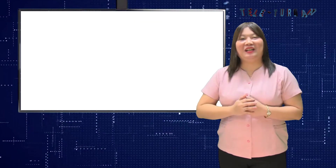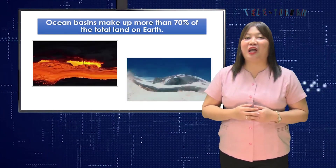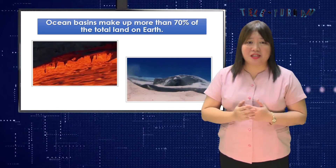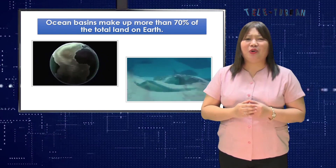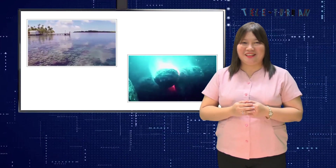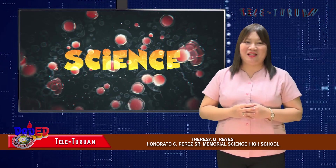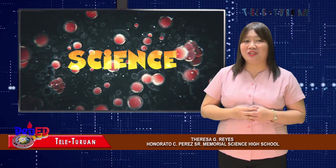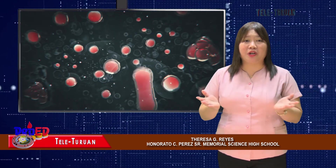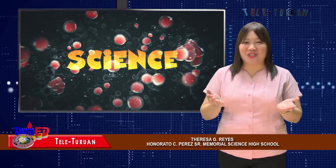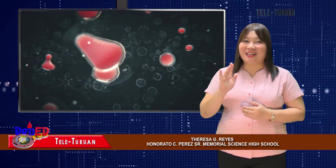There you have it! The structure of ocean basins and stages of their evolution give us the idea that ocean basins make up more than 70% of the total surface on Earth. According to researchers, the Atlantic Basin has been the most active area of oceanic ridge creation over the past 200 million years. I hope you have become fascinated with the structure and evolution of ocean basins, just like oceanographers or marine geologists who continually unravel and explore the world ocean. I am Teresa G. Reyes, your Earth Science teacher here at Deped Our Teleturuan. Bye and good day!